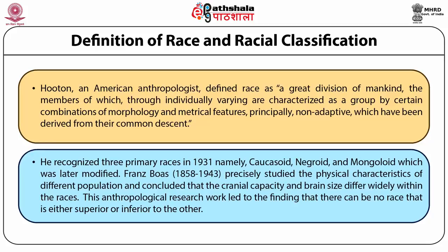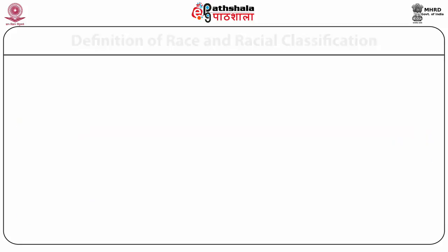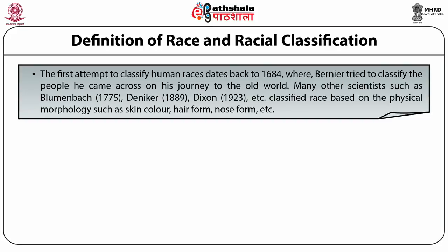According to Franz Boas, who precisely studied the physical characteristics of different populations and concluded that the cranial capacity and brain size differ widely within the races, this anthropological research work led to the finding that there can be no race that is either superior or inferior to the other. The first attempt to classify human races dates back to 1684, where Bernier tried to classify the people he came across on his journey. Many other scientists such as Blumenbach (1775), Deniker (1889), Dixon (1923), etc. classified race based on physical morphology such as skin color, hair, hair form, nose form, etc.